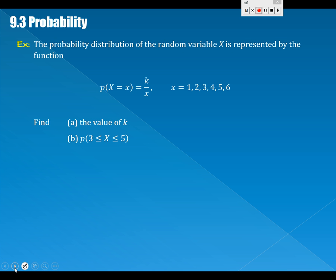Let's try a slightly harder one. The algebra will be harder, but the concept is still not super hard. I mean, we still need to have them all sum to 1. The probability distribution of the random variable X is represented by the function p(X=x)=k/x for x=1,2,3,4,5,6. Find the value of k.